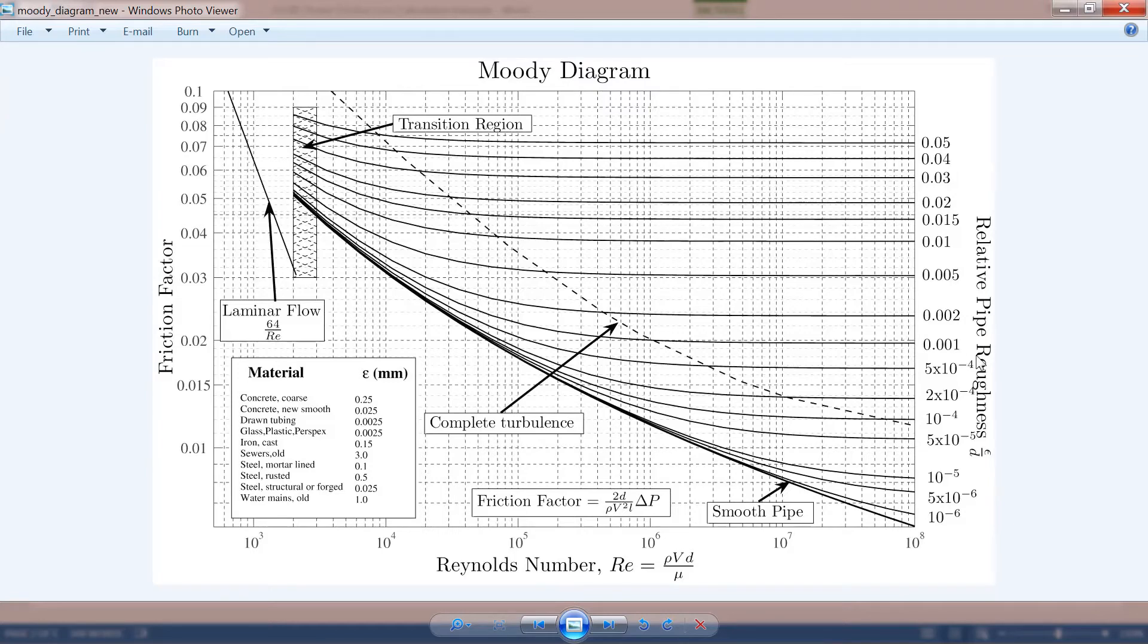The relative roughness was calculated as 6.5 times 10 to the power negative 4, somewhere around here, a little bit above this line. We follow this line, and the 60,000 was here. We follow this way to get the friction factor.